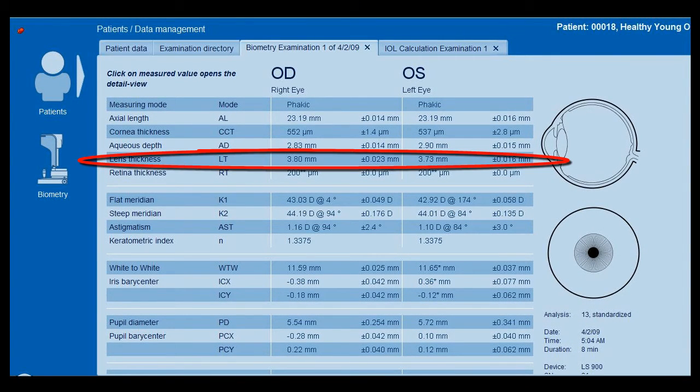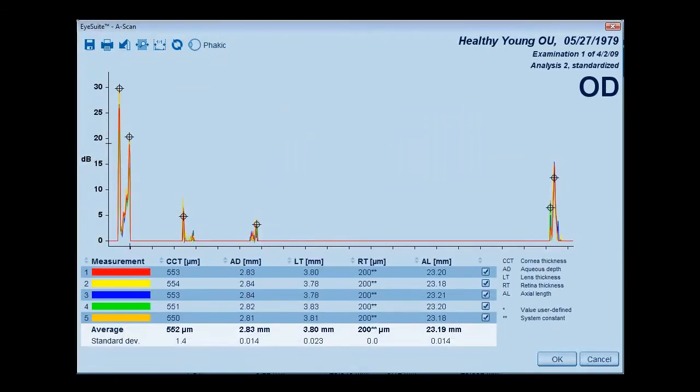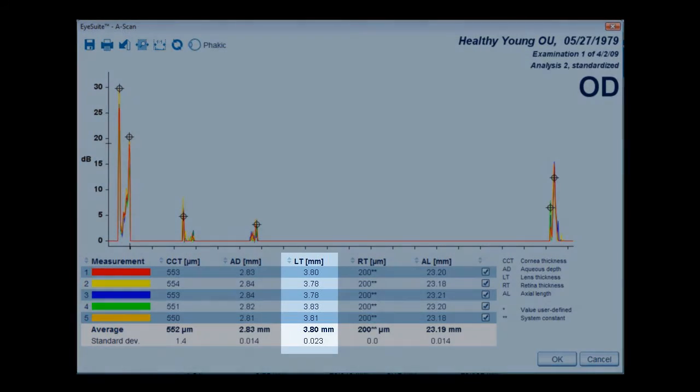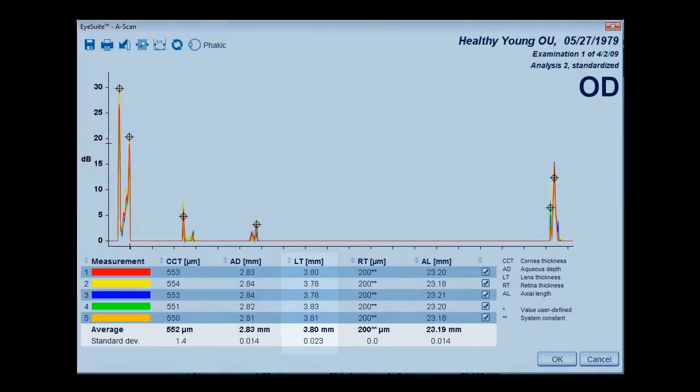By selecting any of the lens thickness values, the physician can open a new window displaying all of the individual lens thickness measurements from the biometry acquisition. From this screen, the user may select individual measurements to evaluate independently.